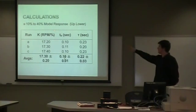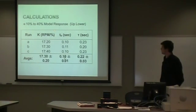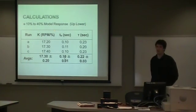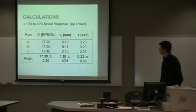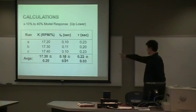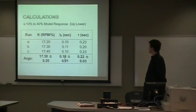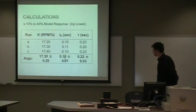This is the 10 to 40 response. These are all the different runs that we did: A, B, and C. You can see that we get an average gain of 17.3 plus or minus 0.2, a dead time of 0.1 with percent error of 0.01, and a time constant tau of 0.22 plus or minus 0.03.